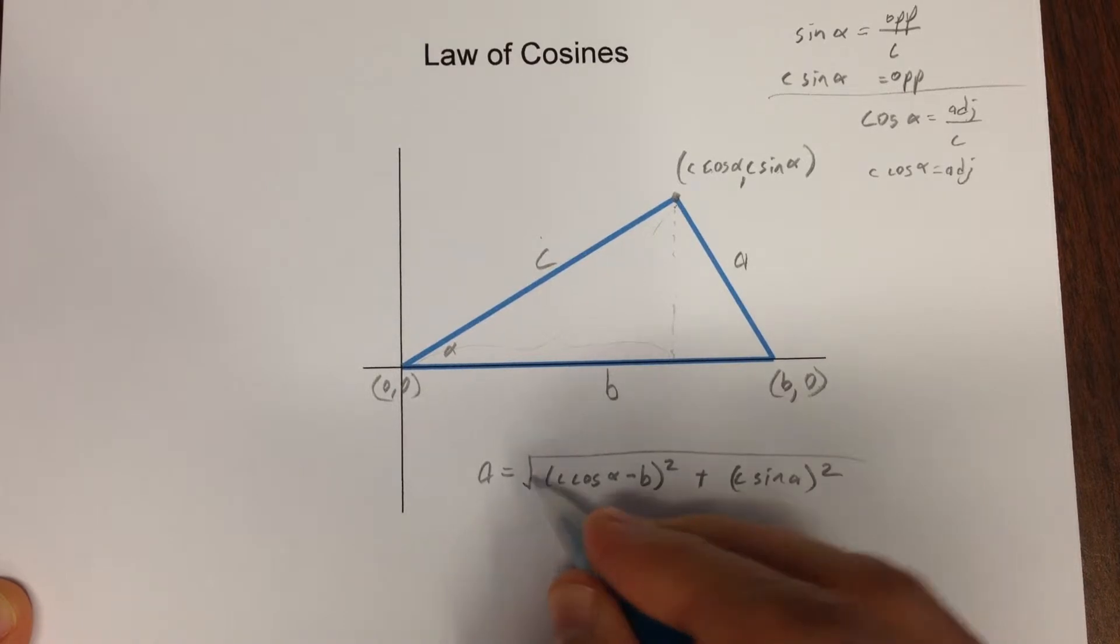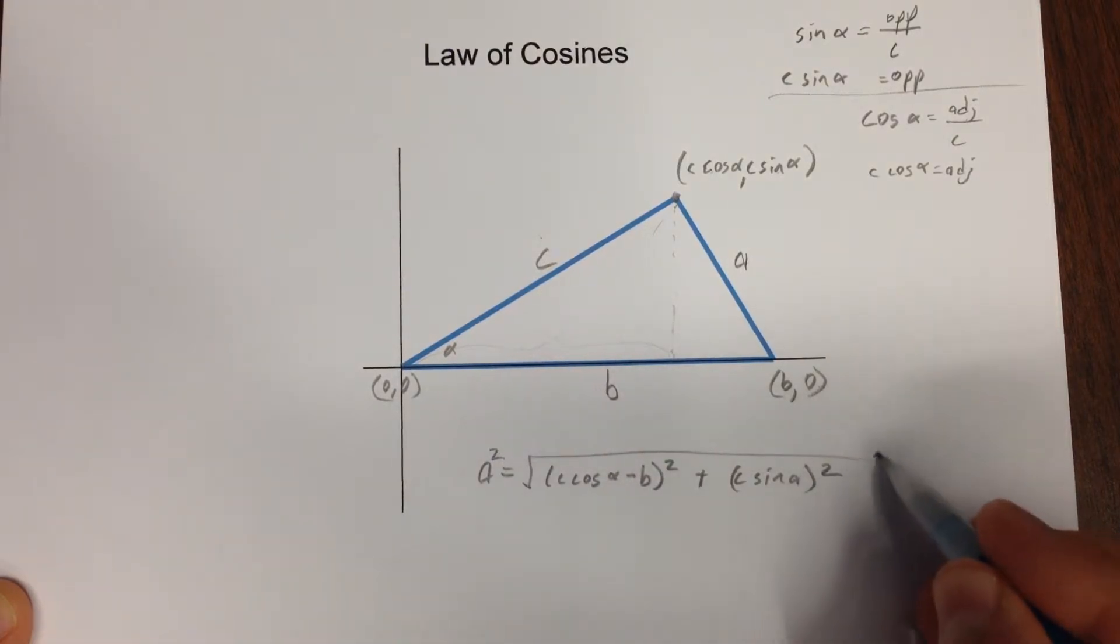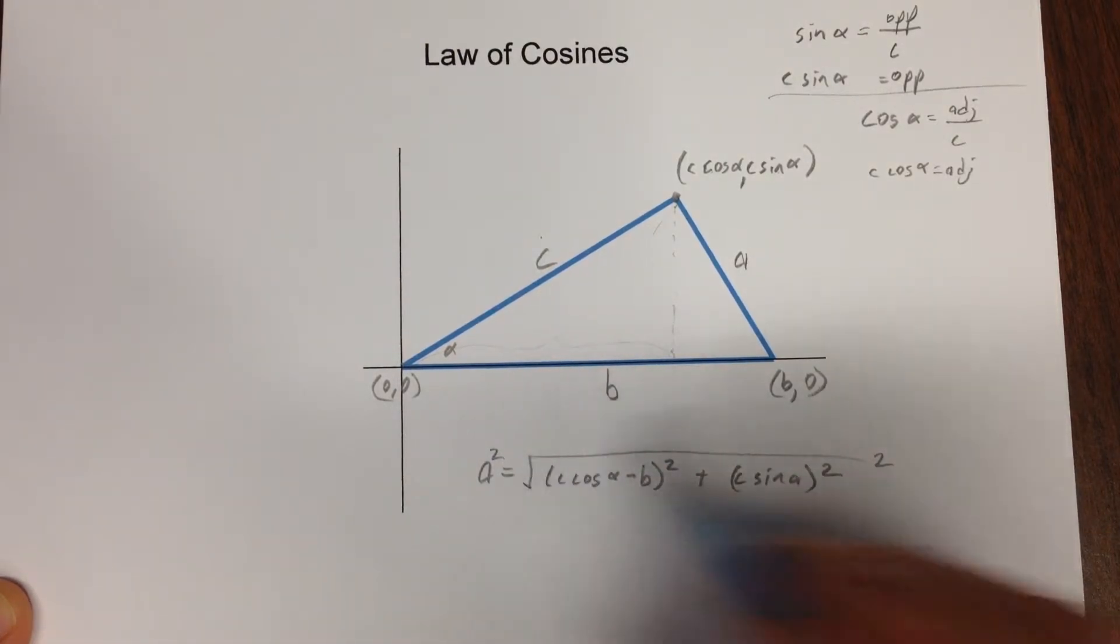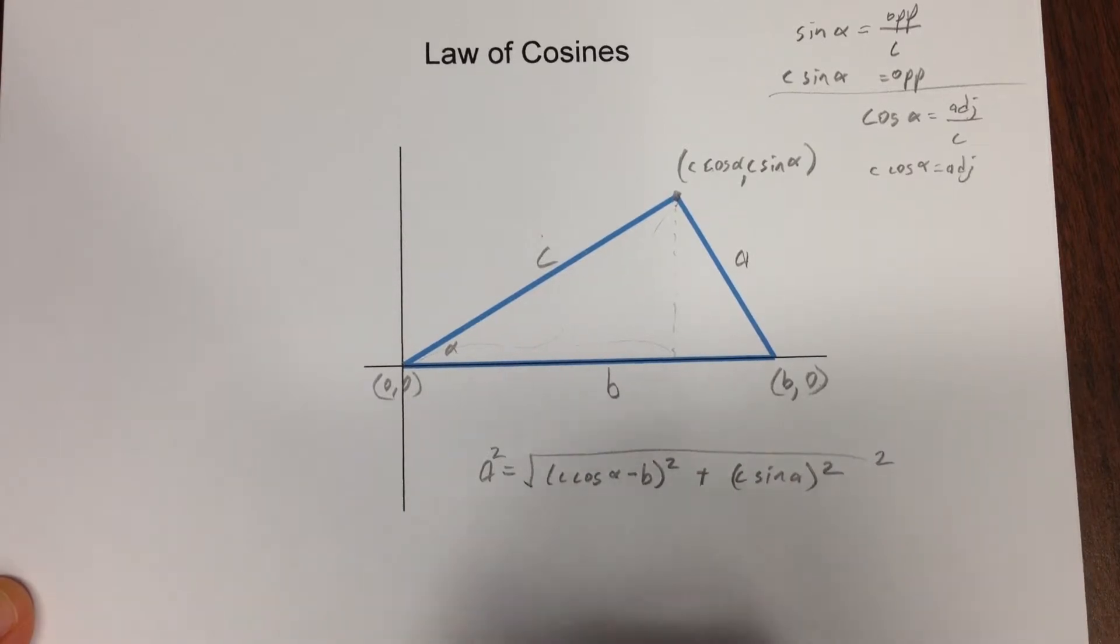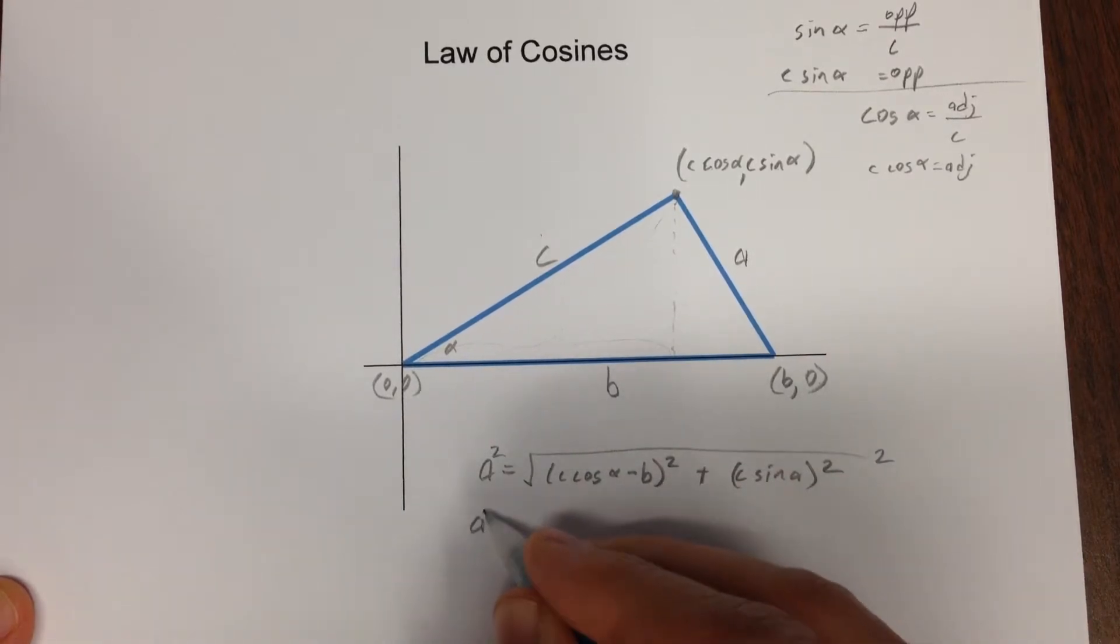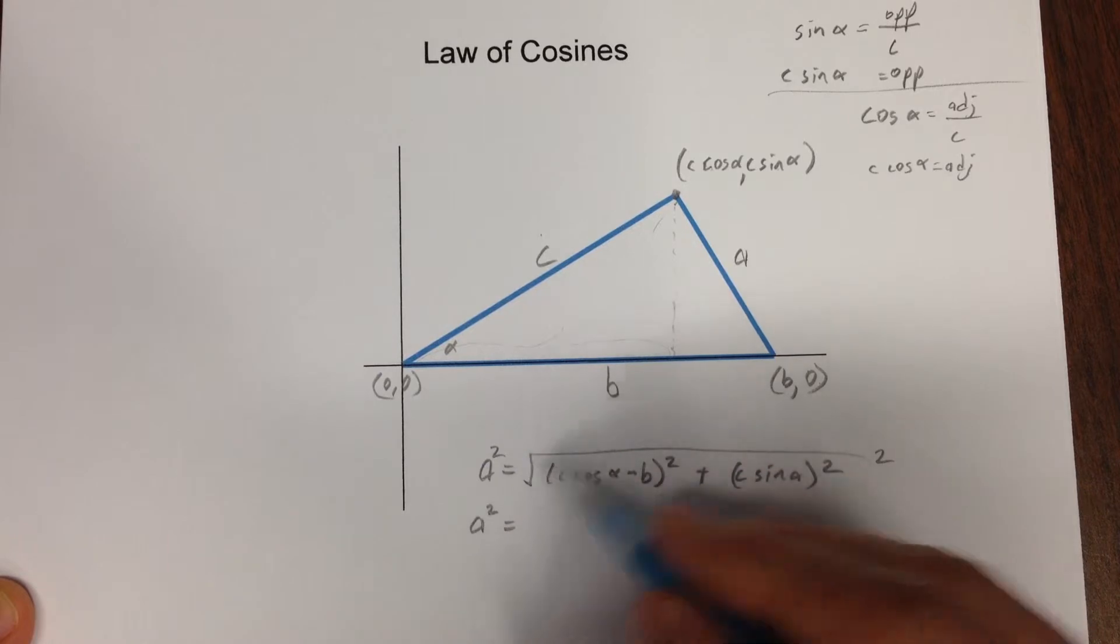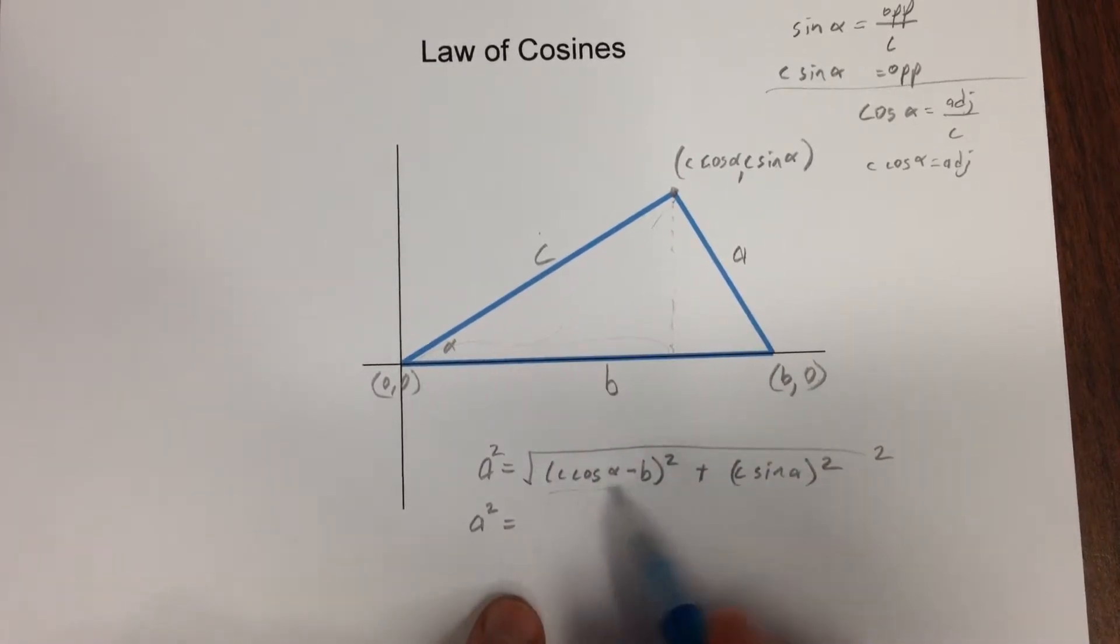First, I'm going to square both sides so that the square root and the squared undo each other. So I get a squared equals, ignoring now the square root, I can worry about this term in here.